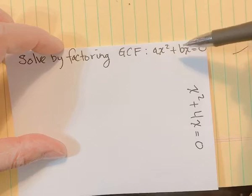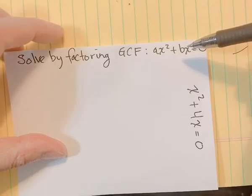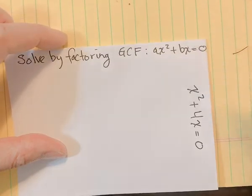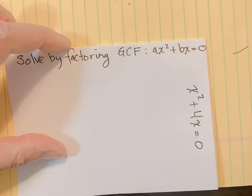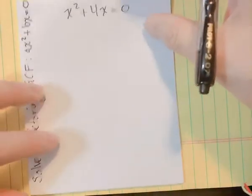If you notice, there is no C. So when your quadratic equation has no C term, the best method to use would be factoring the GCF. I'm going to show you an example of that right here.